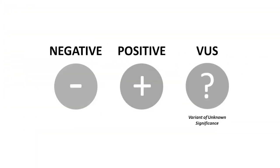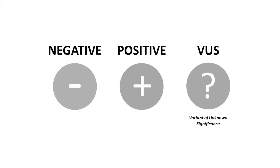When pursuing genetic testing, there are usually three possible results that may return: negative, positive, or variant of unknown significance.